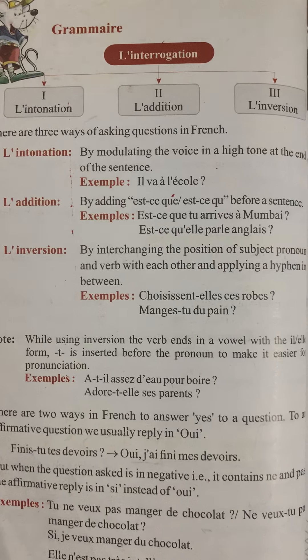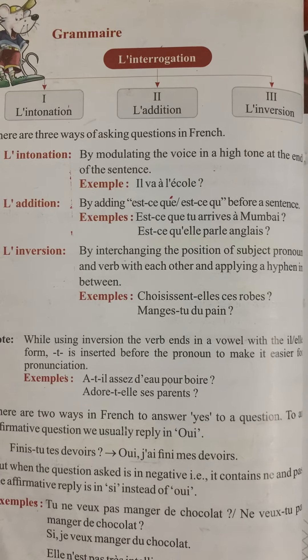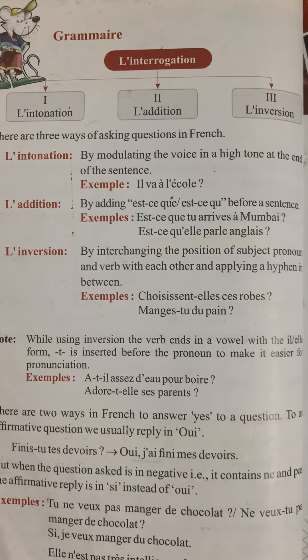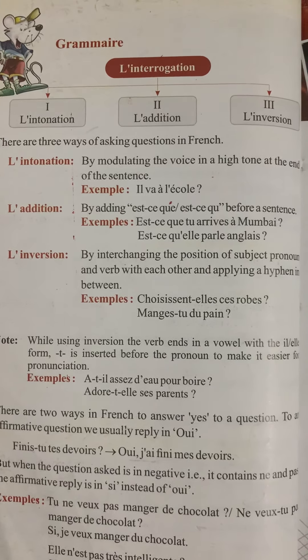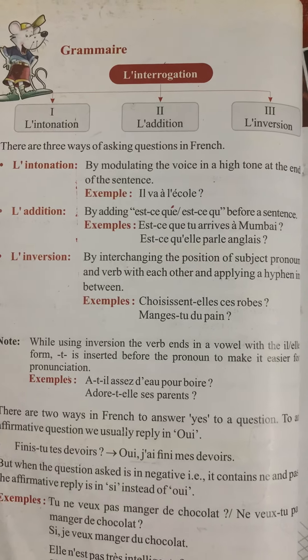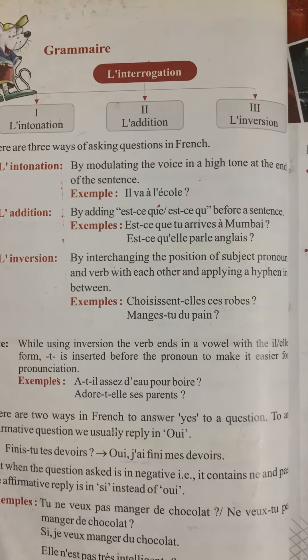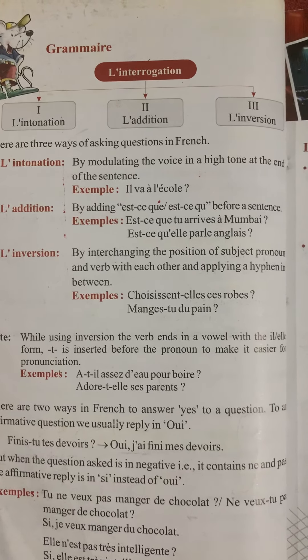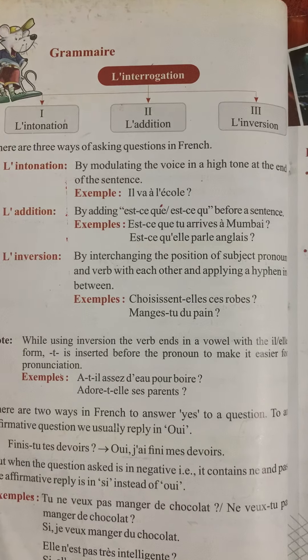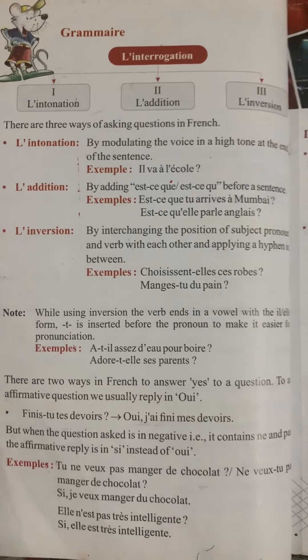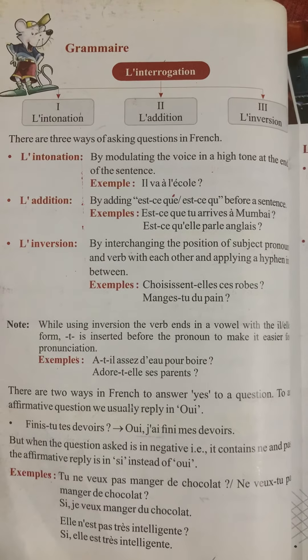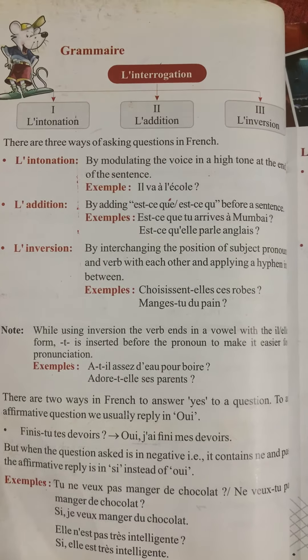'Est-ce qu'elle parle anglais?' — 'qu'' apostrophe is used here because the next word 'elle' starts with a vowel. This means 'Does she speak English?' Whenever the sentence in English starts with 'does', it corresponds to 'est-ce que' in French.